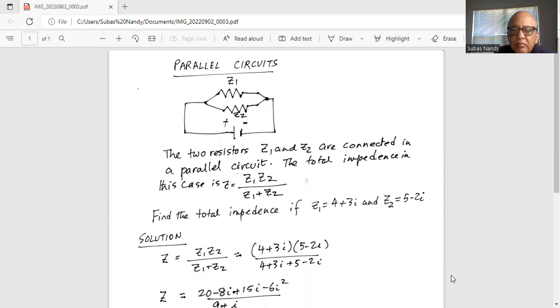Find the total impedance if Z1 is equal to 4 plus 3i and Z2 is equal to 5 minus 2i.